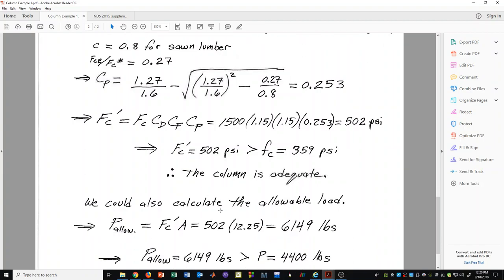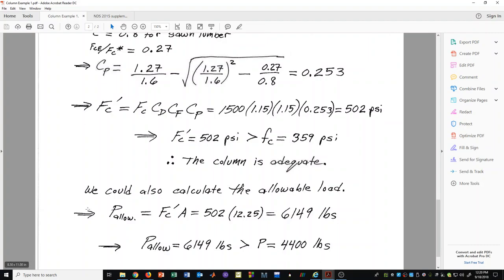We could also, although this is not necessary, calculate what the allowable load is. We could take that allowable stress and simply multiply it times the cross sectional area, 12.25, and we get 6,149 pounds.